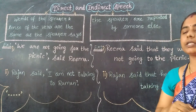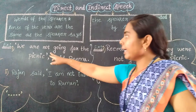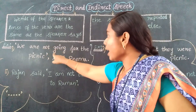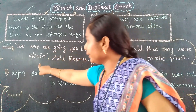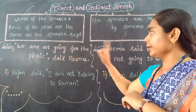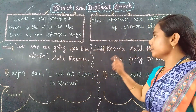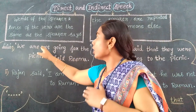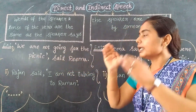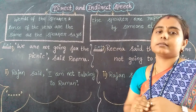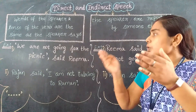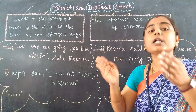Let us see an example. Look at the example: 'We are not going for the picnic.' See the difference between direct speech and indirect speech. Here, 'We are not going for the picnic' is enclosed in a quotation — whether it may be a single quotation or a double quotation. It is enclosed in a single quotation.